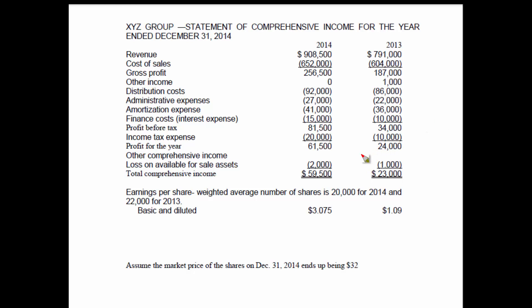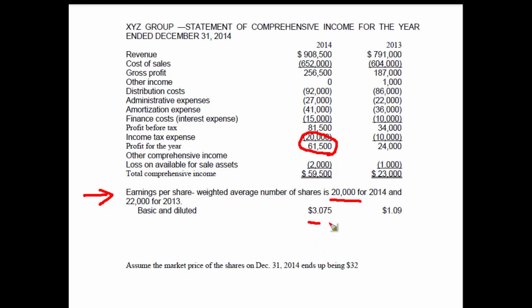Here on the income statement is the profit for the year of $61,500. This is before other comprehensive income, so we're only going to look at the income from our normal operations. Here underneath the income statement, you can see that already calculated for us is the weighted average number of shares of 20,000 for 2014. This information has to be provided either on the financial statements or in notes to the financial statements. Already calculated and provided for public companies is this number of $3.075.